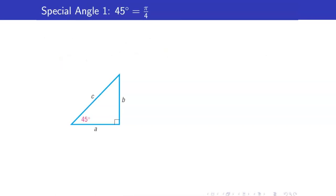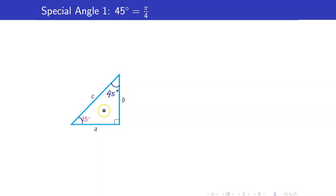Let us start with our first special angle, 45 degrees or pi over 4. I have here a right triangle with one angle equal to 45. Take note that this second angle here is also equal to 45 degrees because the two acute angles in a right triangle are complementary — they must add up to 90 degrees. Since these two angles are congruent, the side opposite these two angles must also be congruent.